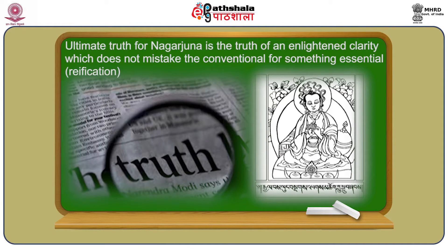So this is Samvritti. When we talk about the ultimate truth, we see that for Nagarjuna, ultimate truth is the truth of enlightened clarity, which does not mistake the conventional for something essential. This is where emptiness comes in — Nagarjuna teaches that all things are empty, and the understanding of this emptiness leads to a greater truth of the ways things really are.